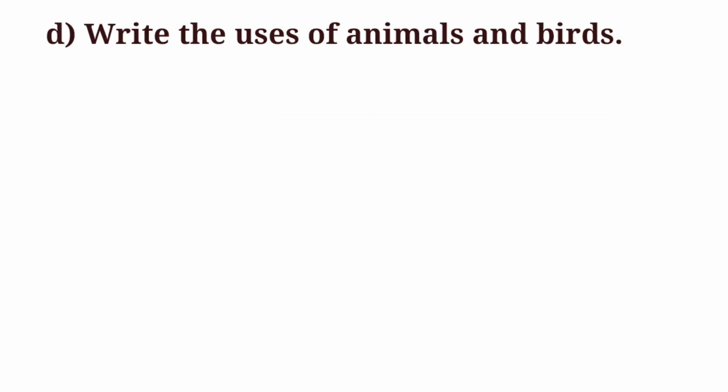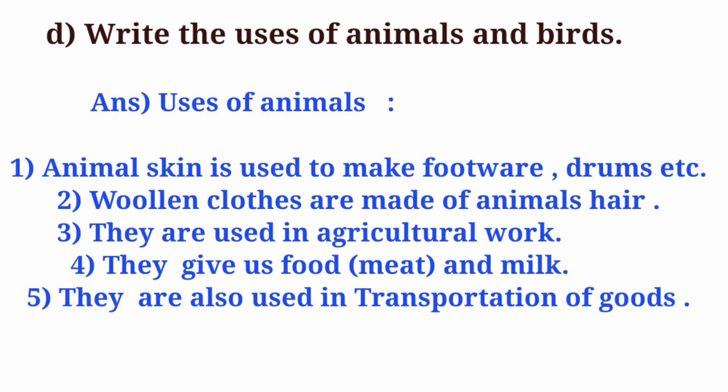Question D: Write the uses of animals and birds. Answer. Uses of animals: Animal skin is used to make footwear, drums, etc. Wool and clothes are made of animals' hair. They are used in agricultural work. They give us food, meat and milk. They are also used in transportation of goods.